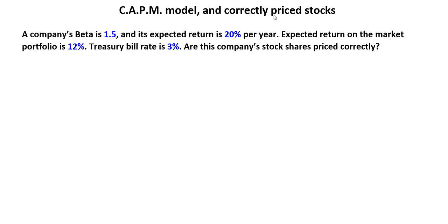CAPM model and correctly priced stocks. First, what do we mean by CAPM? It stands for Capital Asset Pricing Model. The name implies that we are talking about the price for financial assets such as stocks and bonds — the price for one share of stock, the price for one corporate bond, for any company.